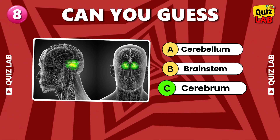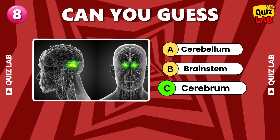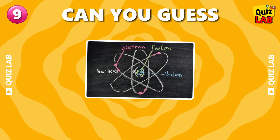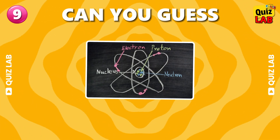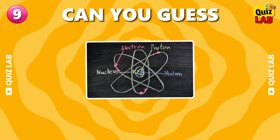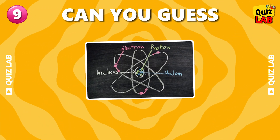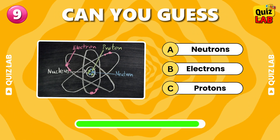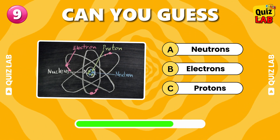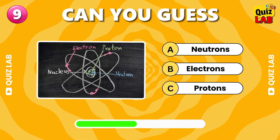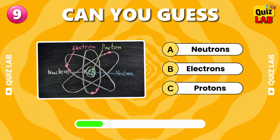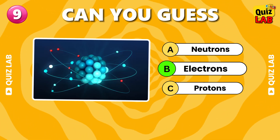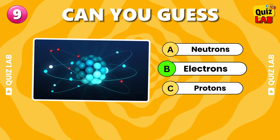Cerebrum. What is the name of the negatively charged particles orbiting the nucleus of an atom? Electrons.